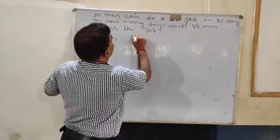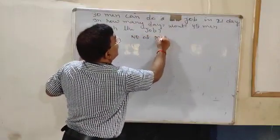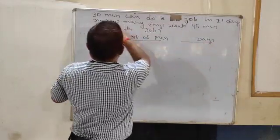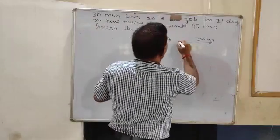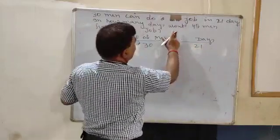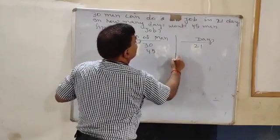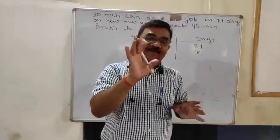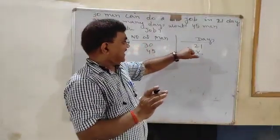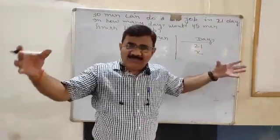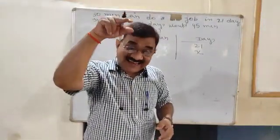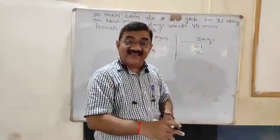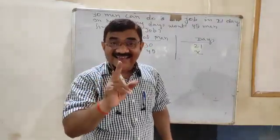On one side write 'number of men' and on the other side write 'days.' If 30 men are there, the work is finished in 21 days. Now if 45 men are there, apply your own brain — 30 men can finish the work in 21 days. If more men are called, naturally the work will be finished in fewer days. So one value is increased and the other is decreased — that is inverse variation.